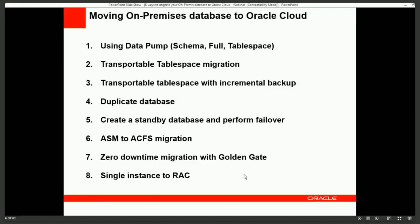In this presentation, we will cover eight ways to move your on-premise database to Oracle Cloud. First, we'll talk about Data Pump and 12c new features that make migration faster. Then we'll cover transportable tablespace migration, how to duplicate a database, how to create a standby database and perform failover, migration from ASM to ACFS, and zero-downtime migration using GoldenGate, including converting a single instance to RAC.